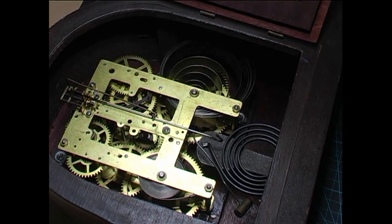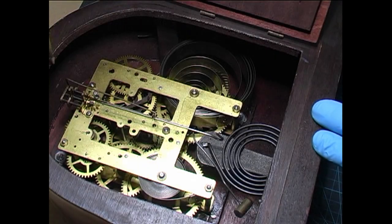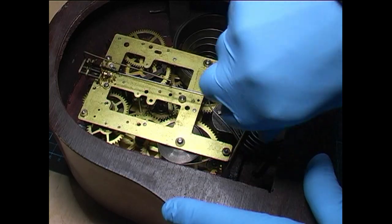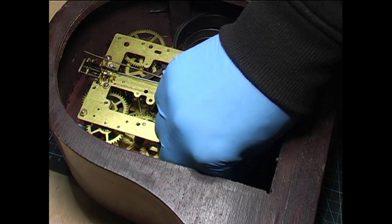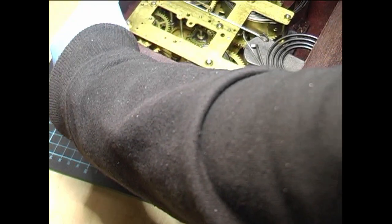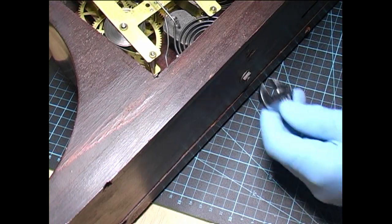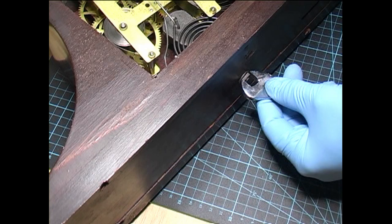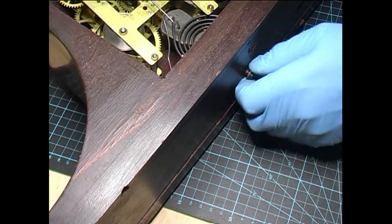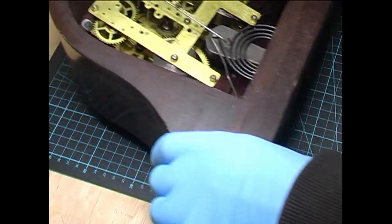Right, there's the movement. We've got four screws to remove. One there, one there, one there, one over there. So we'll get them started. Okay, that's all the screws removed. Because the spring's unwound, it's pretty tight to get out. So I'll remove the gong by undoing this nut here on the base. Now pull the gong up and remove the movement.